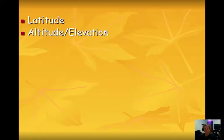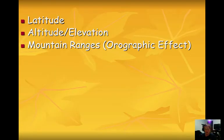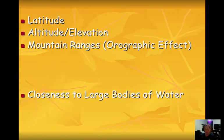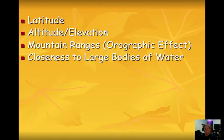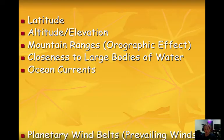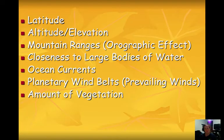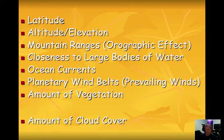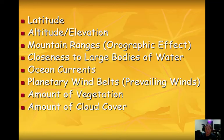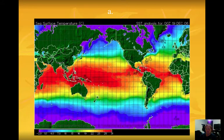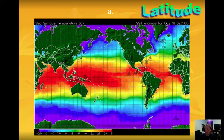The eight factors that affect climate are: latitude, altitude or elevation, mountain ranges, closeness to large bodies of water, ocean currents, planetary wind belts or prevailing winds, the amount of vegetation, and the amount of cloud cover. The first factor we'll discuss is latitude.